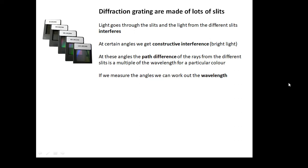That's because the path difference for the different slits at these angles means that the waves of light arrive in phase. We get constructive interference. And if we work out the angles, if we measure the angles at which we get constructive interference, then we can work out the wavelength of the light.